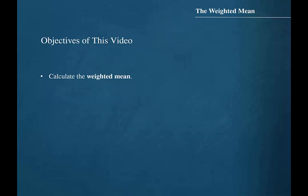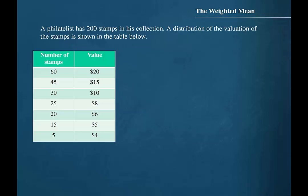The objective for this video is to learn how to calculate the weighted mean. A philatelist has 200 stamps in his collection. A distribution of the valuation of the stamps is shown in the table below.